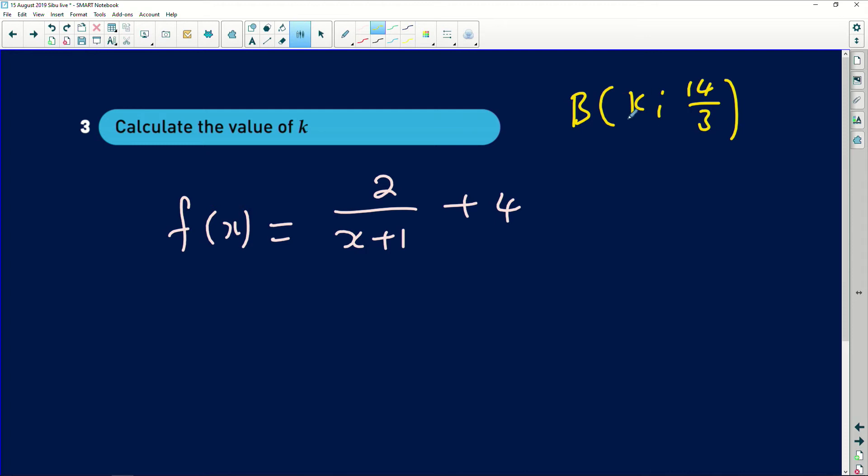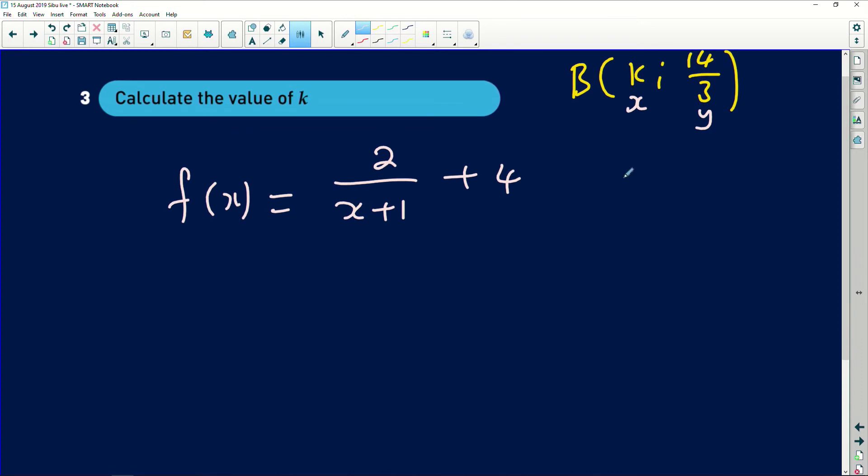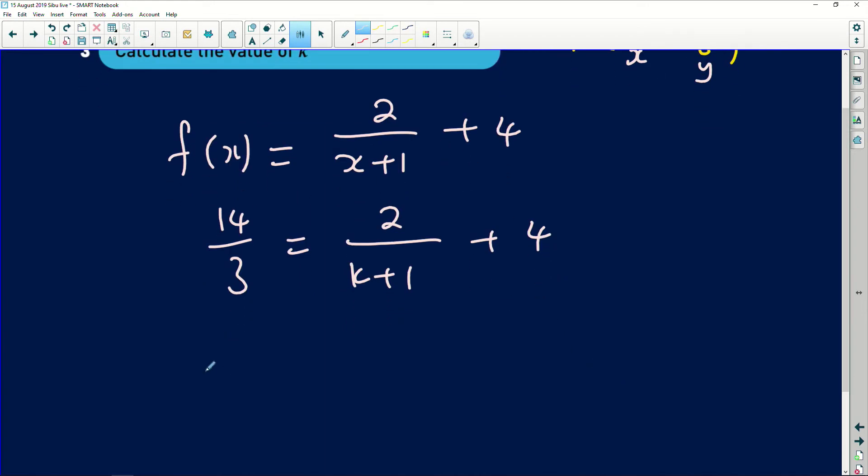So we know that B is (k, 14/3). If you want to find k, you need to acknowledge the fact that this is the x-coordinate when this is the y-coordinate. So we're just going to simply substitute those values in the graph. My y-value is going to be 14/3 = 2/(k+1) + 4. Then just simply take 4 to the left.